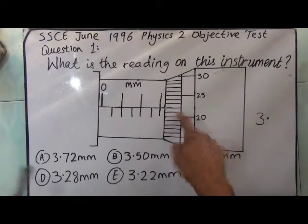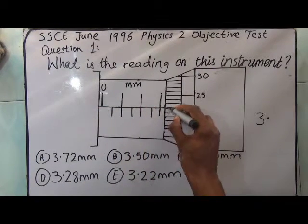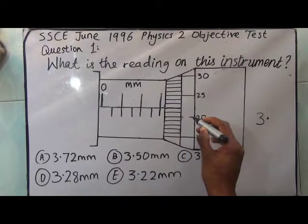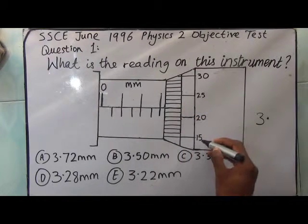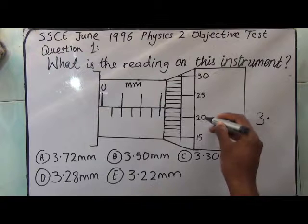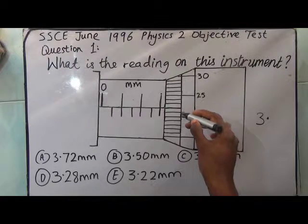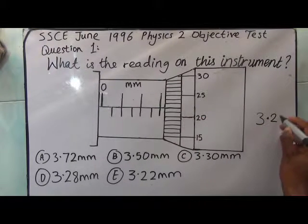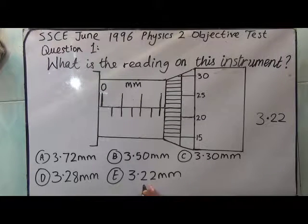So we check the value on the Vernier scale that is in line with this horizontal line on the main scale. And this is the value, what value is this? This is 15, 20, 21, 22. This is 3.22mm.